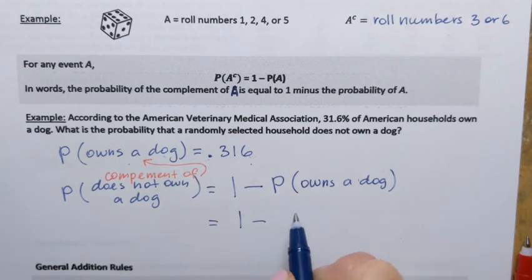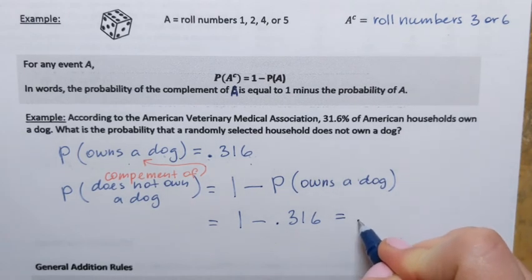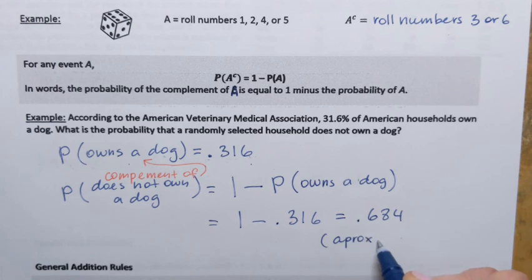If we write it with the number, it's going to be 1 minus 0.316, which is 0.684, which is approximately 68.4% chance.